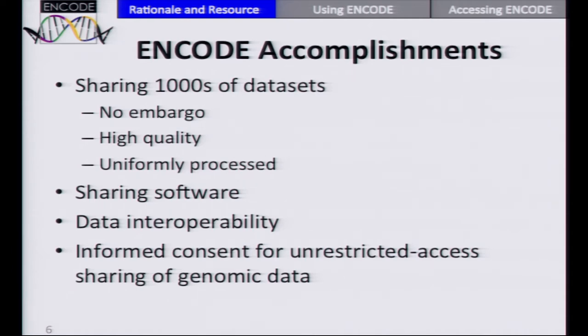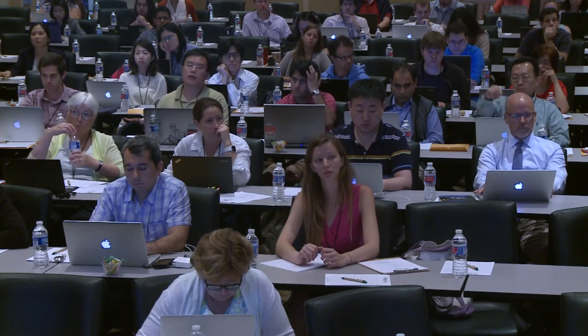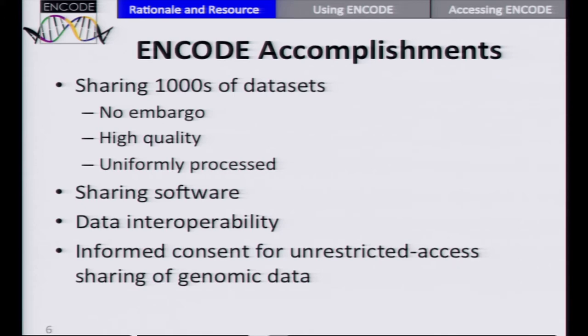The ENCODE consortium is sharing thousands of datasets, generally through GEO, in an unrestricted manner. Data are released without any embargo, pre-publication. The data are high quality and contain replicates, and we uniformly process the data to facilitate comparison from one experiment to the next. We also share software through our data portal and through GitHub. We work hard at data interoperability within the consortium and through partners like IHEC, setting up common standards and ontologies. We've also developed an unrestricted access consent to allow people to participate in human research and share data through an unrestricted access mechanism.